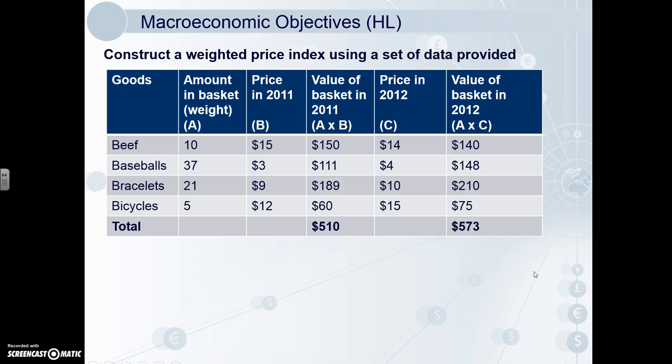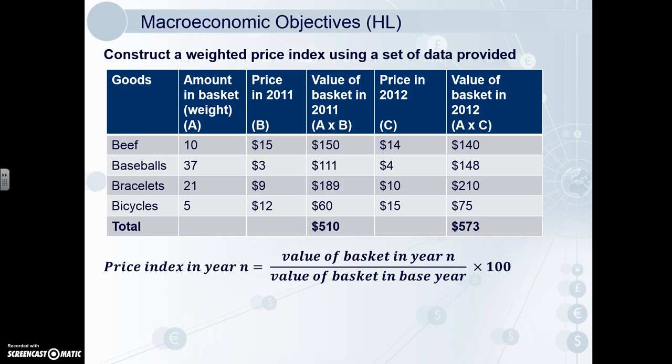Now we'll construct the weighted price index for 2012. Following the same equation and plugging in the numbers: 573 divided by 510 times 100 equals 112. It's important to remember that indices do not have units — so it's not 112 dollars or 112 inflations, it is just 112. You will be penalised for giving incorrect units, so be careful.